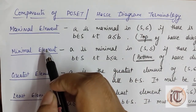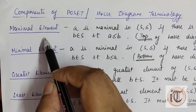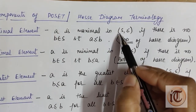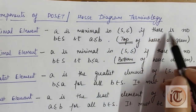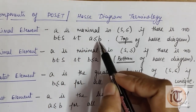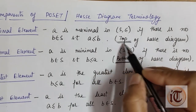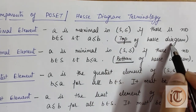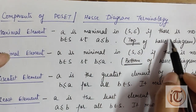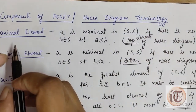The first component of poset is the maximal element. An element a is maximal in poset (S, ≤) if there is no element b belonging to S such that a ≤ b. In other words, all the top elements of the Hasse diagram are the maximal elements.